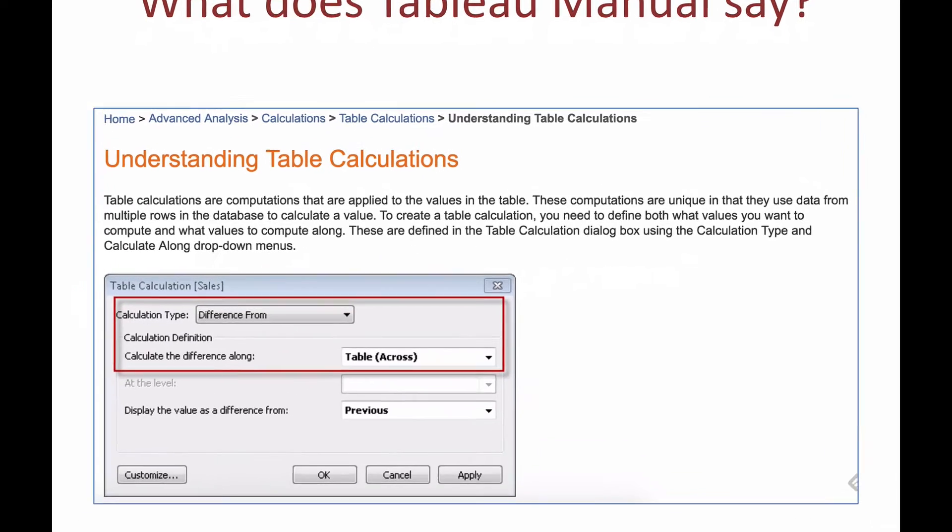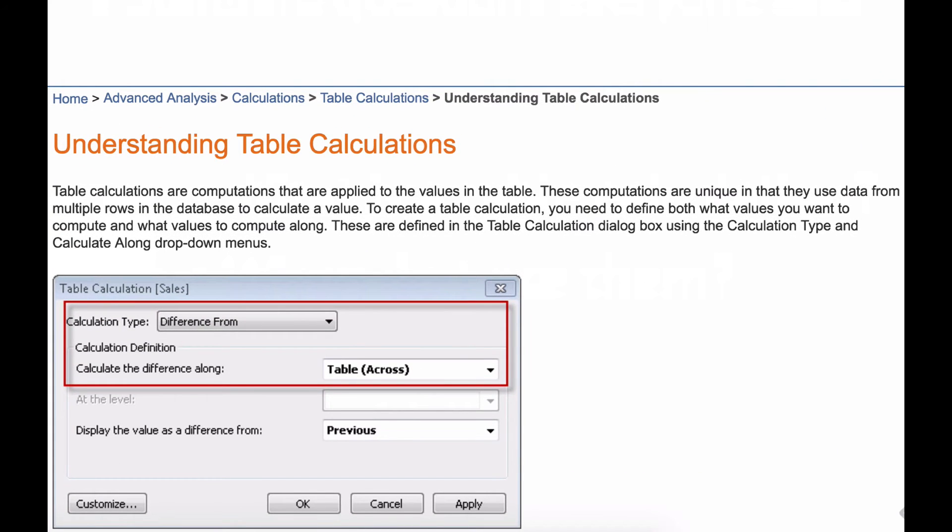Table calculations are computations that are applied to the values in the table. I mean, this is what I would call a circular definition - table calculation is a calculation applied to the table. How helpful is that? I didn't find it helpful.